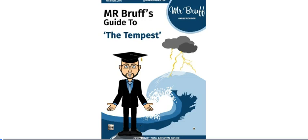Everything I go through in this video comes from Mr Brough's Guide to the Tempest, which I co-wrote with Kerry Lewis, available for just £3.99 at mrbrough.com and amazon.co.uk. It contains the complete original text, a line-by-line translation into modern English, and detailed analysis of language, structure, form, themes, context, etc.